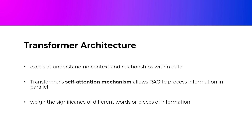Transformer Architecture. To comprehend RAG better, we must dive into the architecture at its core. The Transformer Architecture, a revolutionary development in deep learning, is pivotal to RAG's capabilities — like having a superpowered brain that excels at understanding context and relationships within data. The Transformer's self-attention mechanism allows RAG to process information in parallel, making it incredibly efficient. With this mechanism, the AI can weigh the significance of different words or pieces of information, just as we humans prioritize important details in a conversation.